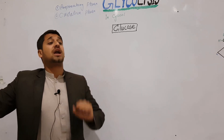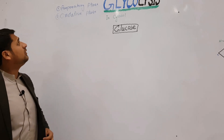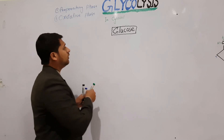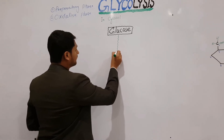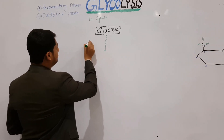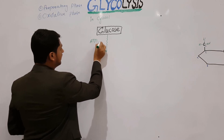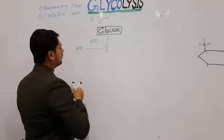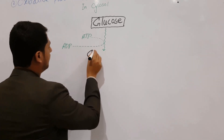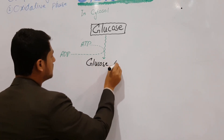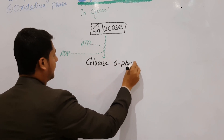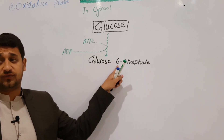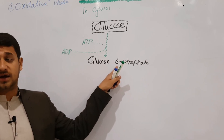Now let's talk about the preparatory phase. This phase starts when the glucose molecule is treated with ATP. When ATP enters, it leaves as ADP, and the molecule will be converted into glucose-6-phosphate. The 'six' here means the position of the phosphate — not the number of carbons or the number of phosphate groups.